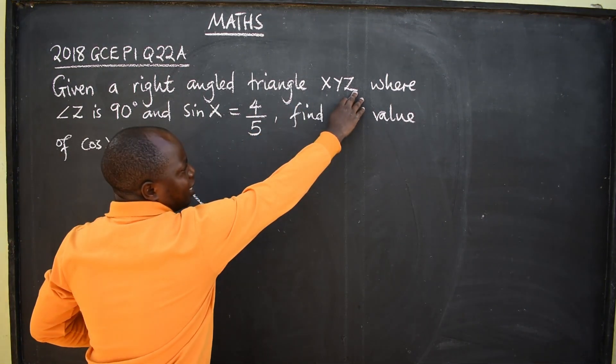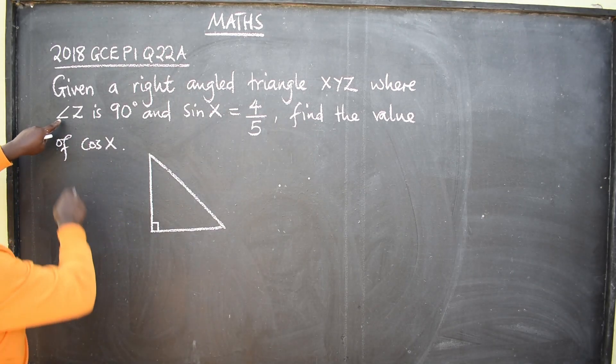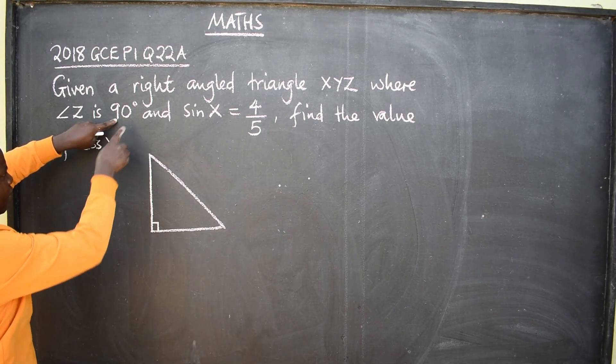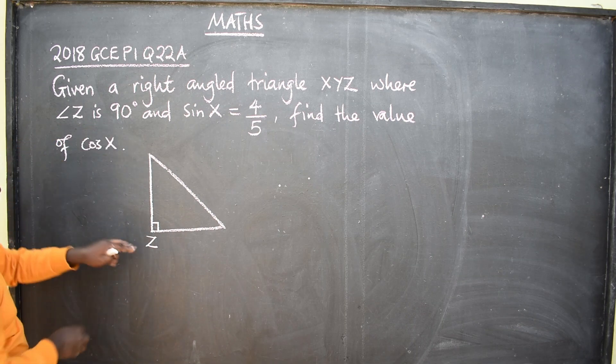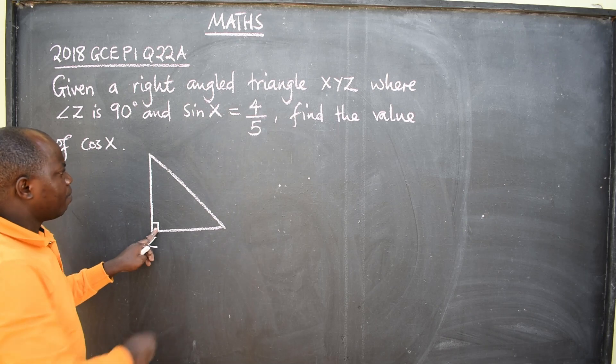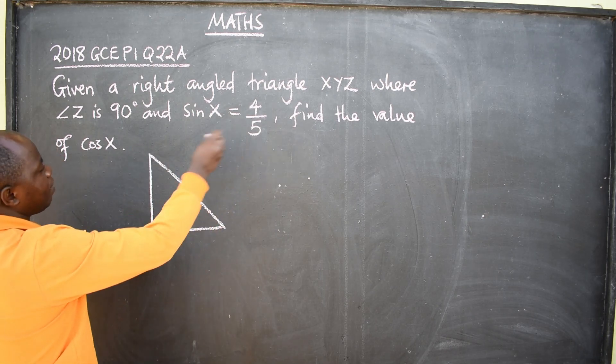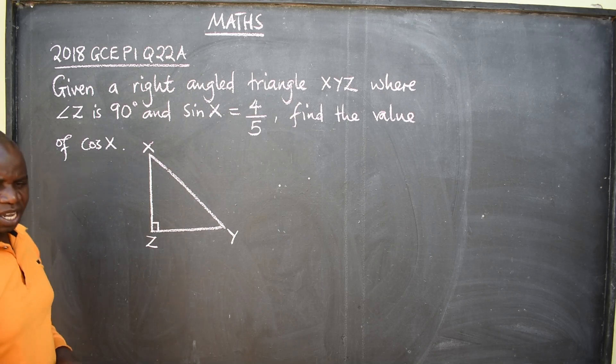Then start putting these letters here. Follow what they are talking about. They are saying angle Z is 90 degrees. So this is where Z is, which is 90 degrees. The moment you see this symbol, it means 90 degrees, meaning the other two now can be x and y, like that. What next?